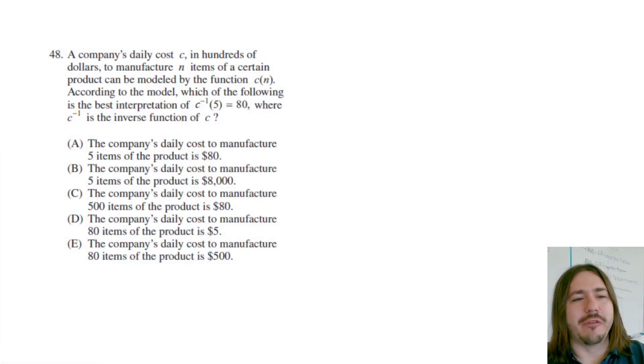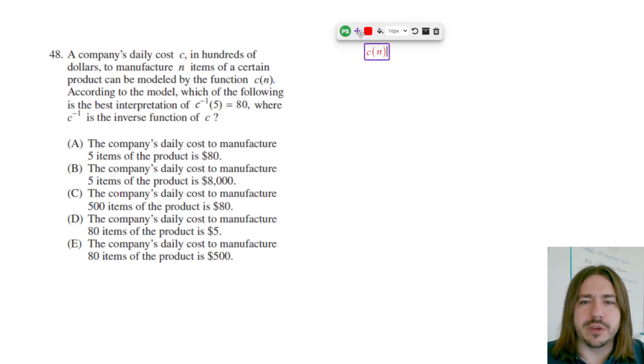Hey y'all, welcome back. Number 48 says a company's daily cost C in hundreds of dollars to manufacture n items of a certain product can be modeled by the function C of n. I know I haven't finished reading the problem yet, but I do want to make sure we establish what these variables mean.